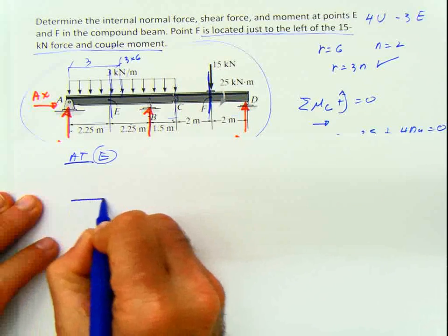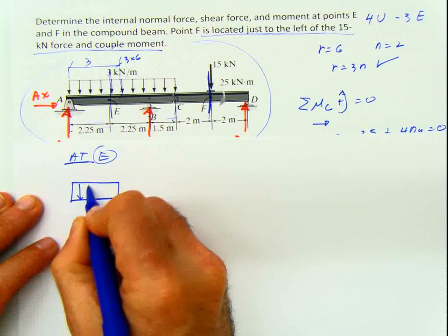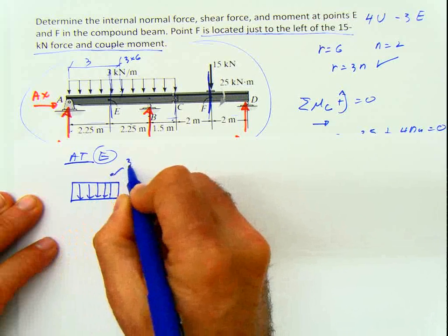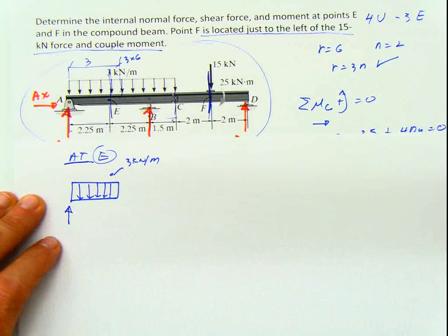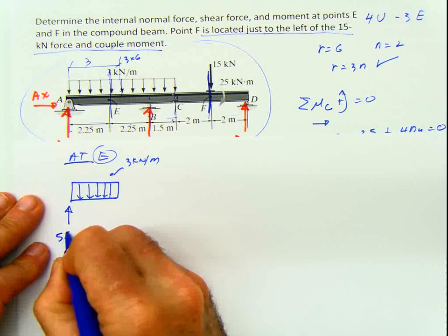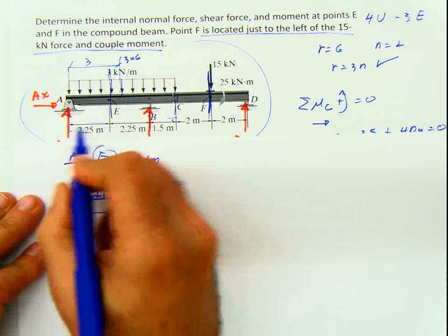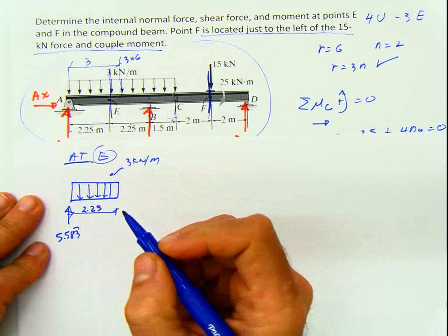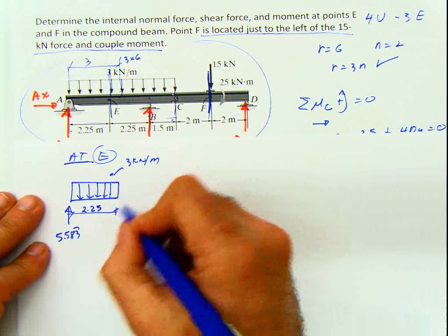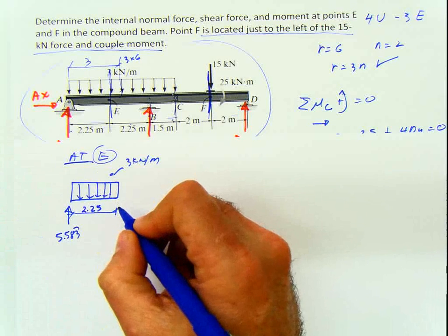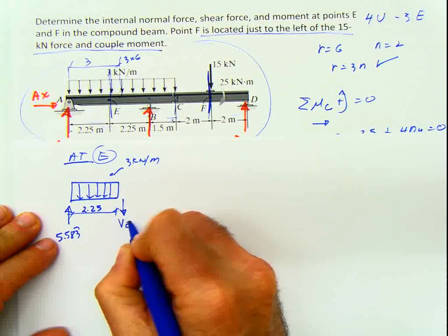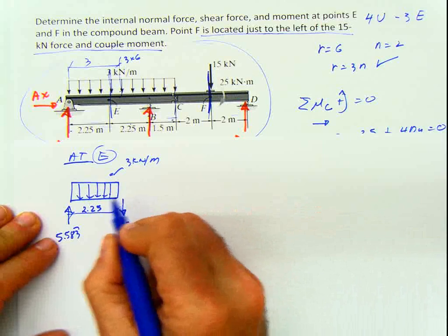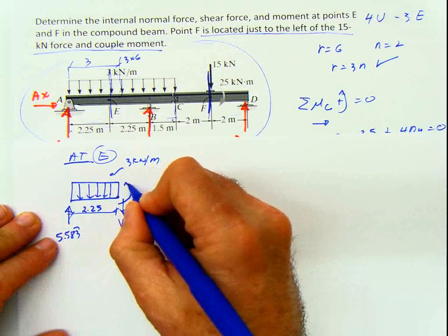At point E, we have the load on top of 3 kilonewtons per meter, our reaction Ay of 5.583 kilonewtons, and the distance from here to E is 2.25 meters. We incorporate the internal forces using this side of the beam. The positive direction gives us VE; the axial force is 0 because there's no axial load here. And we have moment ME.